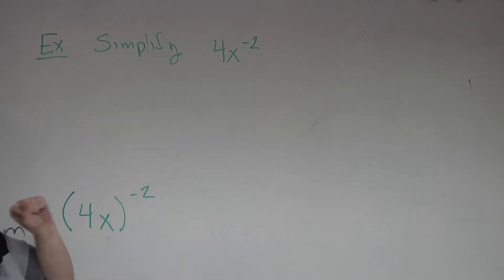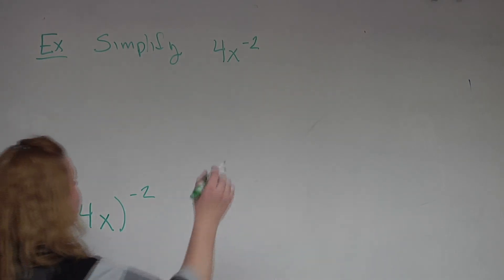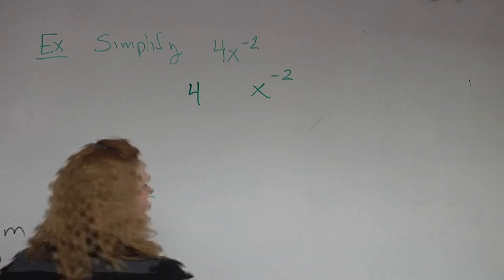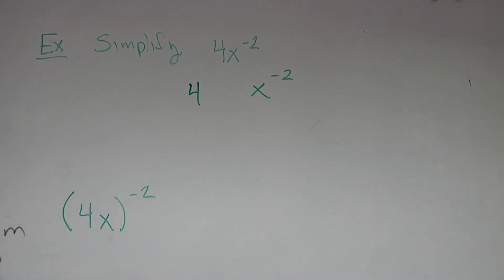First thing to the left is this parenthesis. That means the 4 and the x get this negative 2. First thing to the left of this problem is just the x. The 4 is the second thing to the left. So your negative 2 only goes to the x. So if you separate this, it's really 4 and an x to the negative 2. So what happens with the 4? It stays. Stays exactly where it is. And where is it? In the numerator.